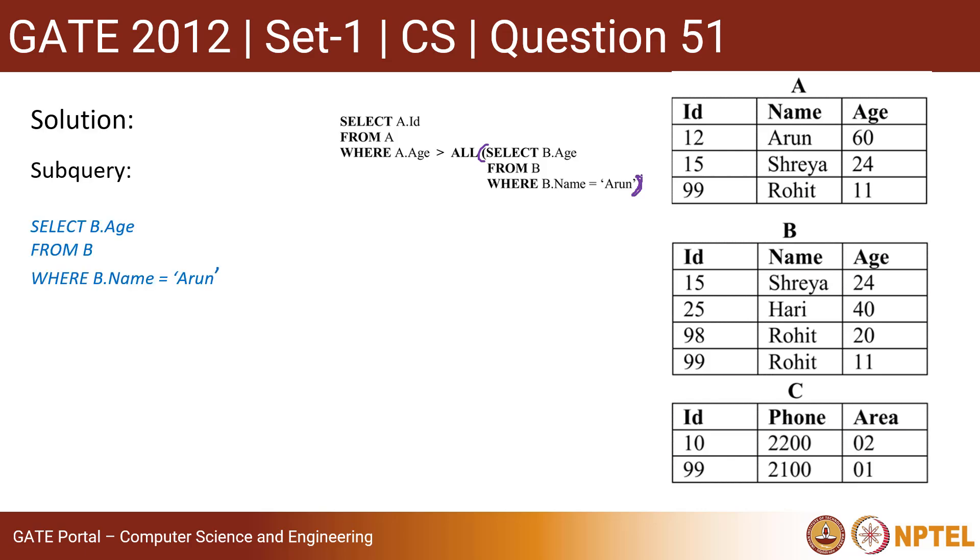Now it says FROM B, so we are basically going for the relation B. It says the B.Name should be Arun. There is no Arun, so you can understand it basically returns zero rows or empty set.